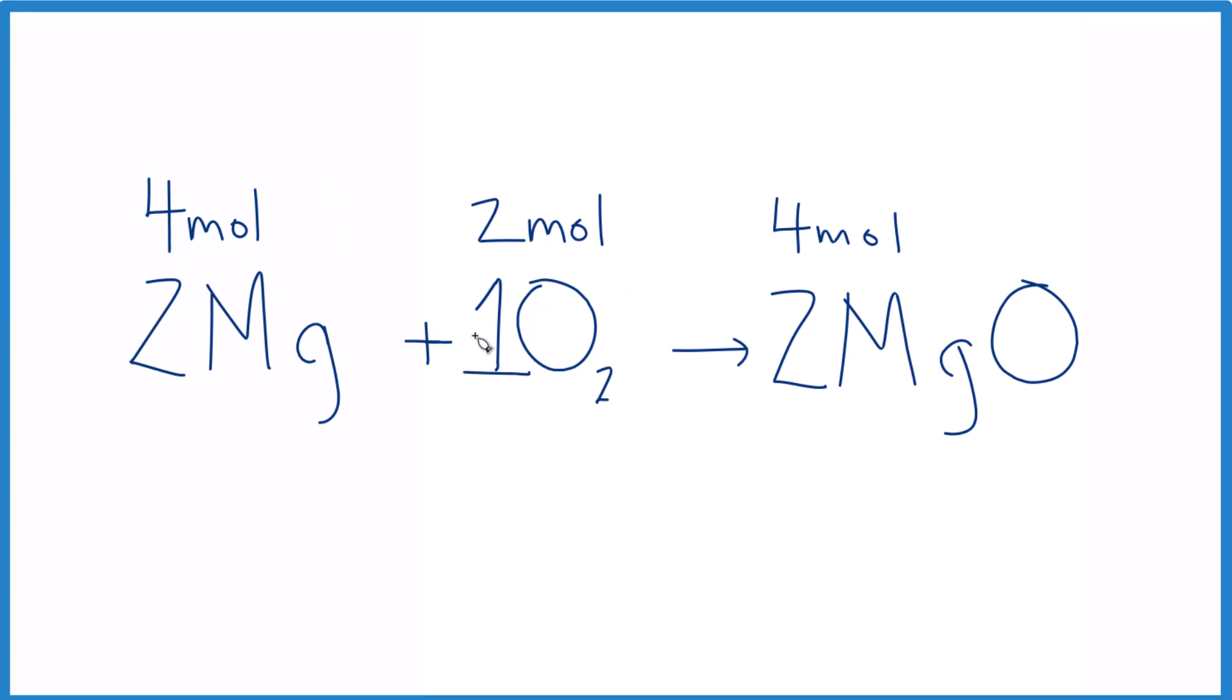So let's try some different numbers. Pause and try this: if you had 1.2 moles of magnesium, how many moles of oxygen would you need to react completely and how many moles of magnesium oxide would you get?